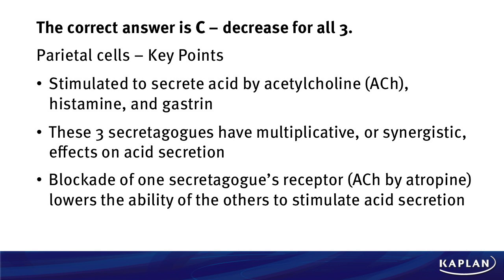Let's talk about some key points of parietal cells. As soon as you read gastrin, acetylcholine, histamine, gastric acid — you better be thinking of your physiology. Parietal cells: where are they, what do they do? Chief cells, G cells, how does the parasympathetic nervous system impact this? What's the anatomy of the stomach? All this priming in your mind as you think about this question. Parietal cells are stimulated to secrete acid by acetylcholine, histamine, and gastrin — these are known as secretagogues.